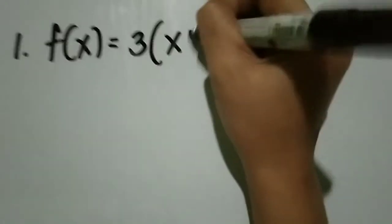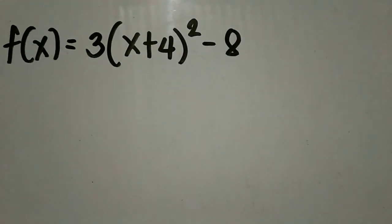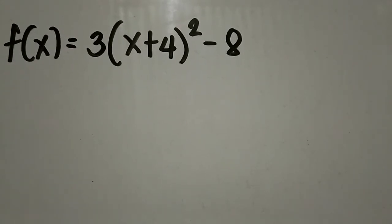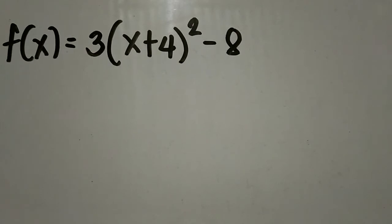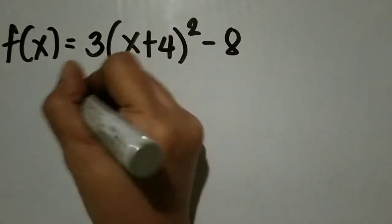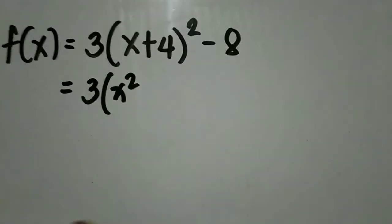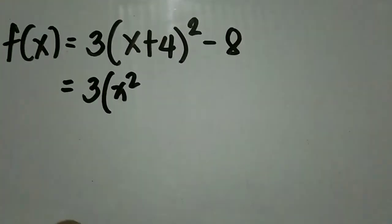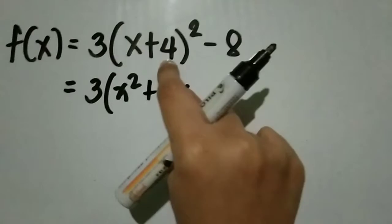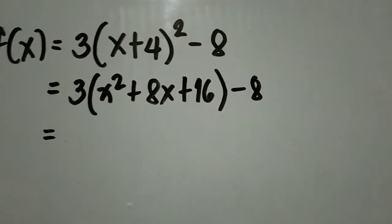Ang given natin sa number 1 ay f(x) = 3(x + 4)² - 8. Ito yung ating given. Kung dati pag nagtransform tayo ng quadratic function into vertex form, nagco-completing the square tayo. Ngayon naman dahil nagtatransform tayo ng vertex form into quadratic functions, ang gagawin natin ay square of binomials. Kunin natin yung product ng ating square of binomials. Square the first term: x². Then multiply the first and last term: 4x times 2 equals 8x. Then square the last term which is 4, so 16. Then minus 8.